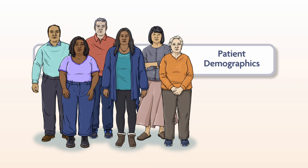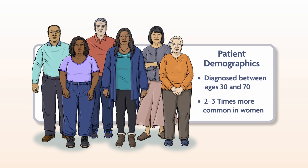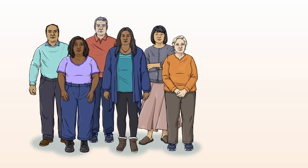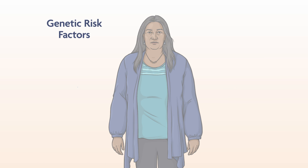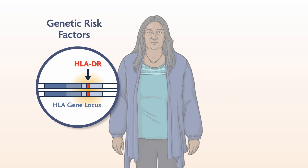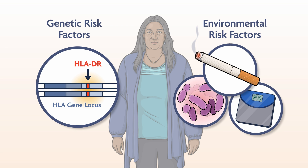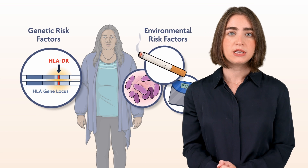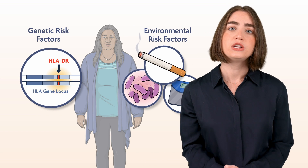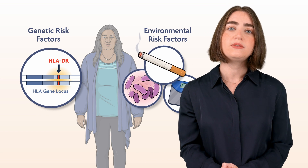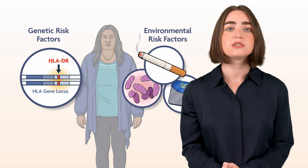Most people diagnosed with RA are between age 30 and 70, and women are 2–3 times more likely than males to develop the disease. While it is not known exactly what causes rheumatoid arthritis, genetic factors such as the presence of variant HLA-DR alleles and specific environmental exposures such as smoking are part of the equation. Early diagnosis and treatment of rheumatoid arthritis are critical to improving quality of life and preventing irreversible damage.